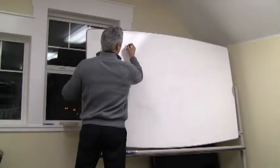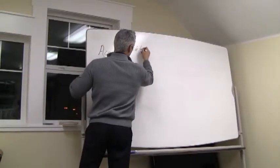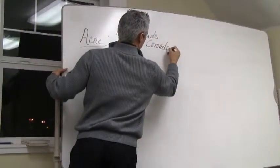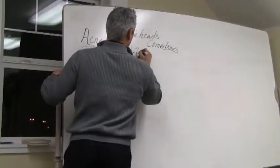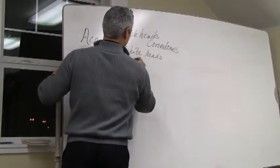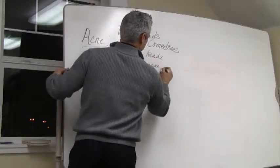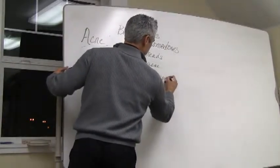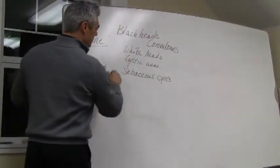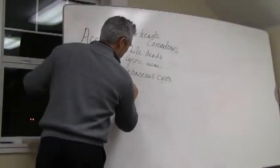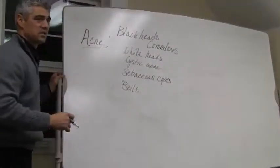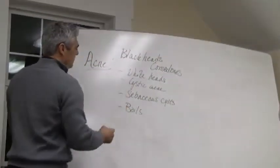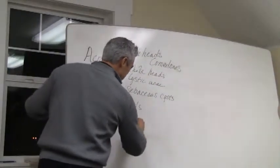When we talk about acne, we have blackheads or comedones, we have whiteheads, we have cystic acne, we have what are called sebaceous cysts which aren't really acne. This is when a gland is completely backed up or clogged up. We see this a lot in older adults. We have what are called boils. And then we also have a condition called folliculitis.